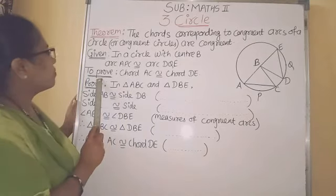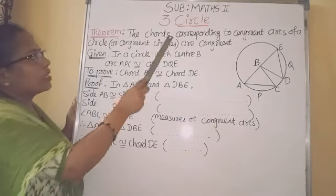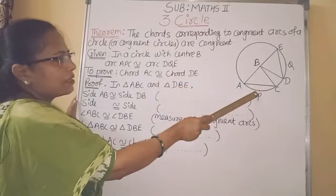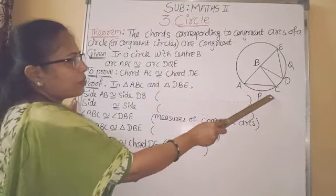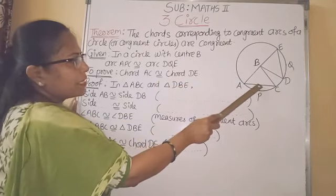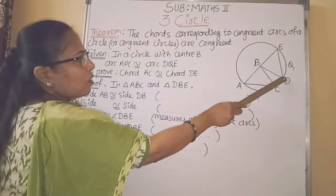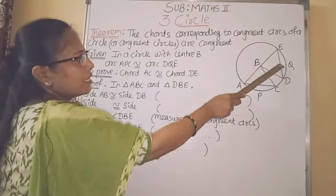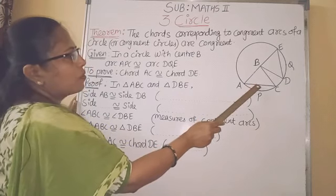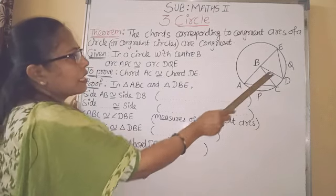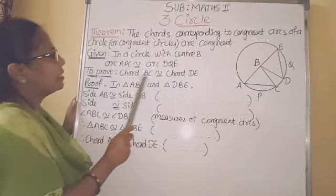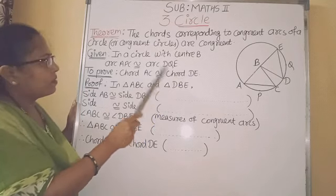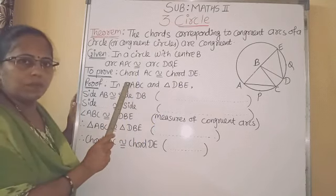Then what we have to prove: the chords corresponding to these arcs. Chord corresponding to arc APC is chord AC, and chord corresponding to arc DQE is chord DE. So, we have to prove chord AC is congruent to chord DE.